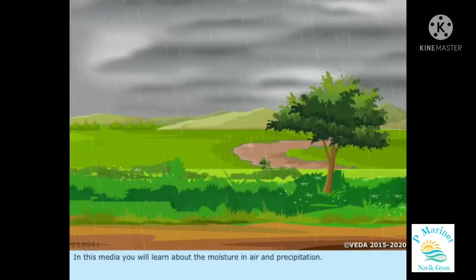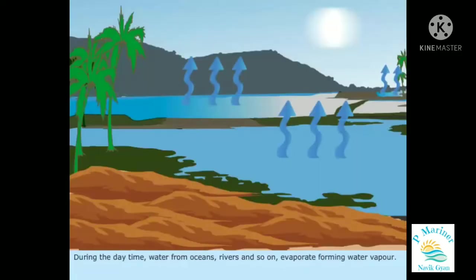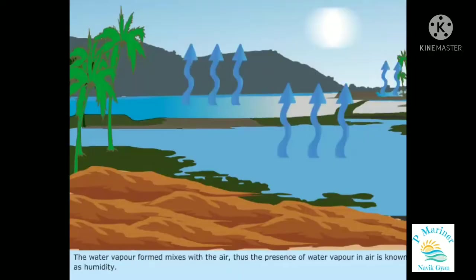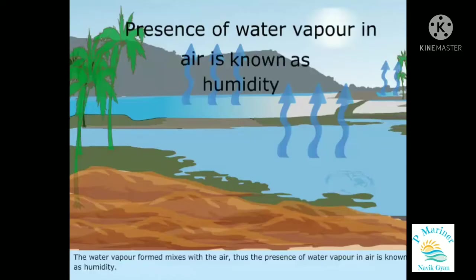In this media, you will learn about the moisture in air and precipitation. During the daytime, water from oceans, rivers, and so on evaporates, forming water vapor. The water vapor formed mixes with the air, and the presence of water vapor in the air is known as humidity.